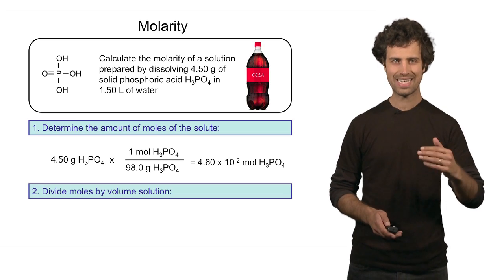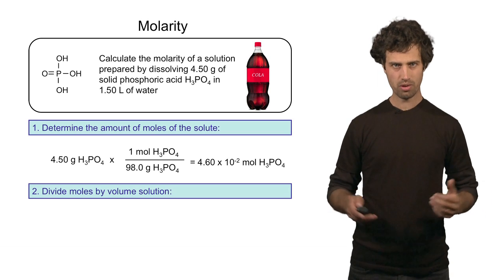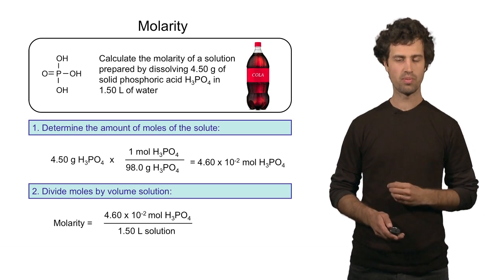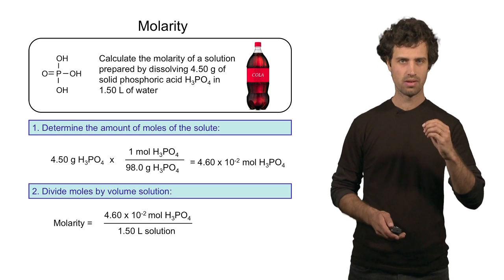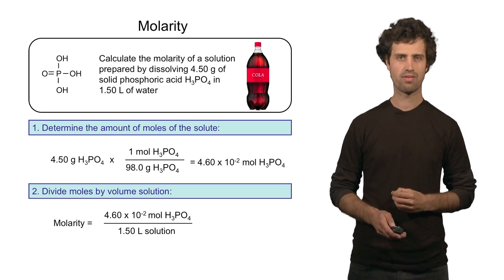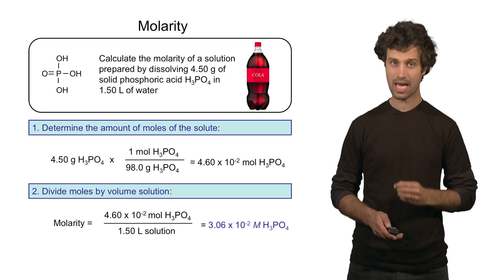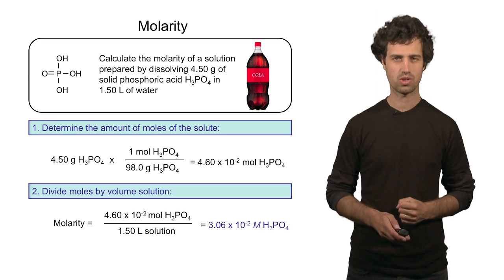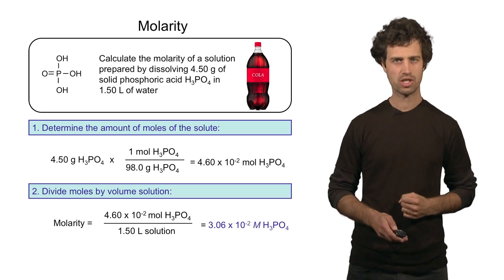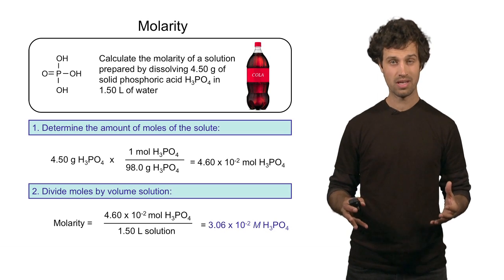To find the concentration, I take the number of moles and divide that by the total volume of the solution. Taking 4.6 times 10 to the minus 2 moles divided by 1.5 liters gives 3.06 times 10 to the minus 2 molar phosphoric acid. Note that this concentration, by the way, is the concentration of phosphoric acid in cola.